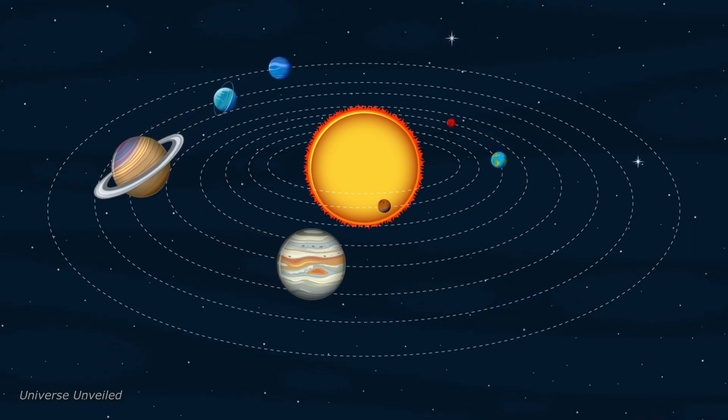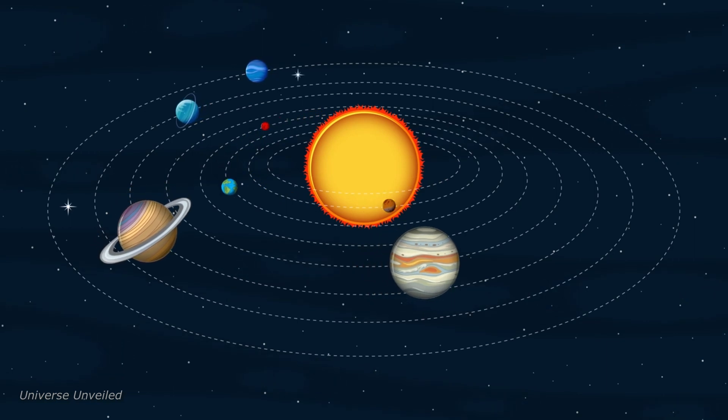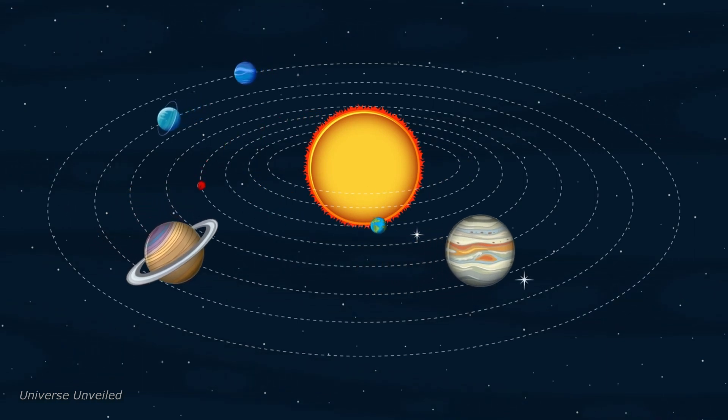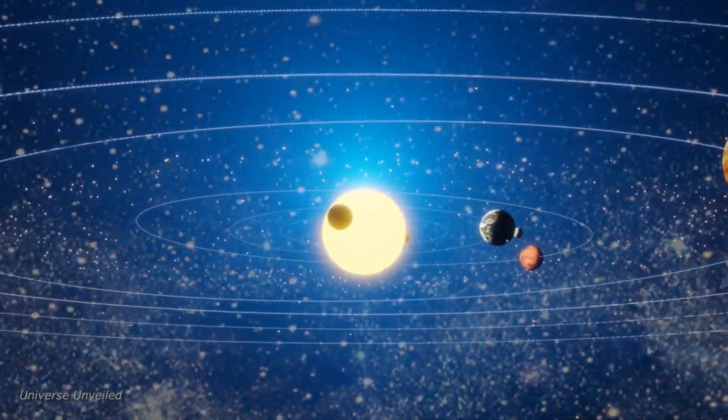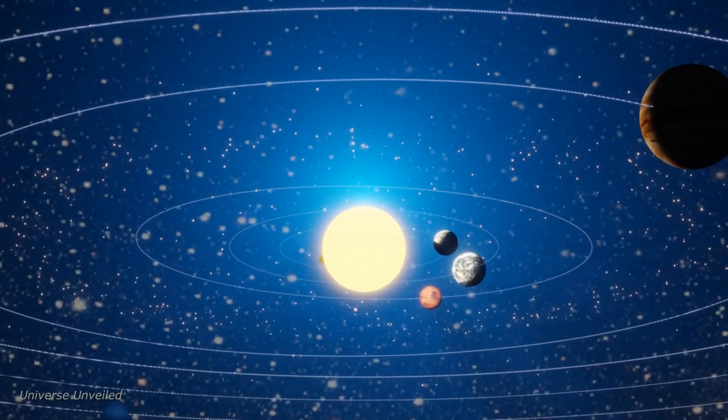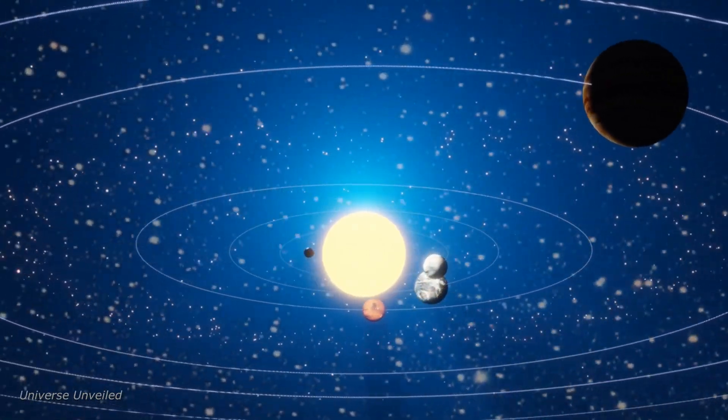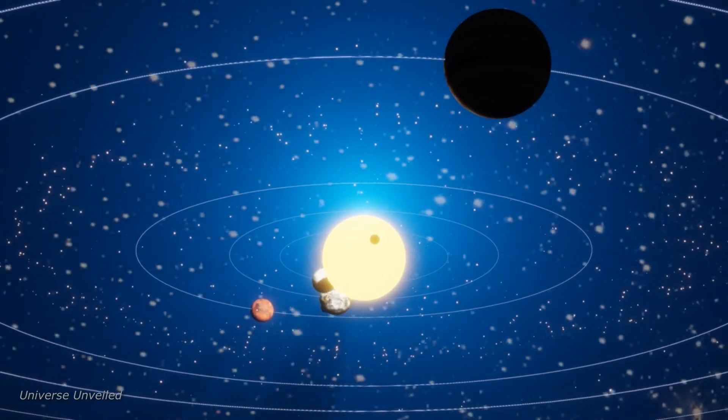The hunt for habitable planets has taken an exciting turn with the study of GJ-1252b, a planet orbiting an M-dwarf star. Despite the intense radiation and extreme temperatures, the possibility of the planet retaining an atmosphere opens up new vistas in our quest for habitable worlds.